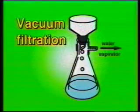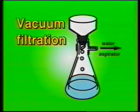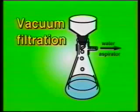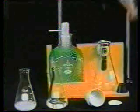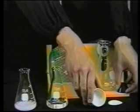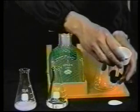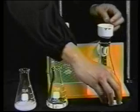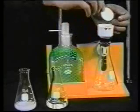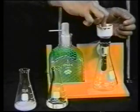Now that the crystals have formed, they need to be collected and dried in order to determine the yield from the crystallization and to analyze the purity. The separation of crystals from the supernatant liquid is best achieved by vacuum filtration, which has the added advantage of drying the crystals. Vacuum is applied to the filter flask through a water trap. Place the Buchner funnel on the filter vac adapter in the neck of the filter flask and then add filter paper.